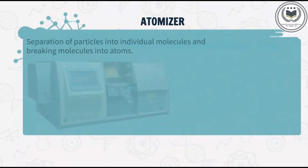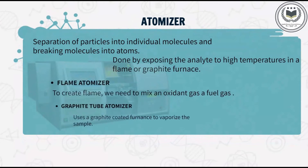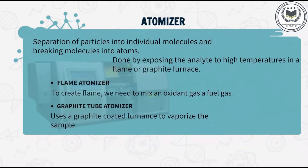Atomization is the separation of particles into individual molecules and breaking molecules into atoms. This is done by exposing the analyte to high temperatures in a flame or graphite furnace. There are two types of atomizer: flame atomizer and graphite tube atomizer. To create a flame, we need to mix an oxidant gas and a fuel gas. The graphite tube atomizer uses a graphite-coated furnace to vaporize the sample. In FAAS, the atomizer is a flame furnace, and in GFAAS, the atomizer is a graphite furnace.